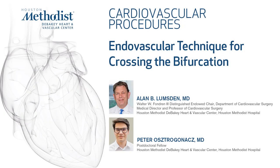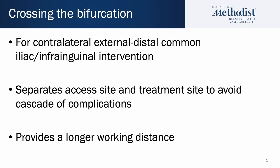With this video we want to demonstrate the technique for crossing the aortic bifurcation. This is one of the most common maneuvers performed in selective catheterization. With this approach we can perform contralateral, external or distal common iliac and infrainguinal interventions. It can separate the access site and treatment site, thus potentially avoiding the cascade of complications. It also provides a longer working distance.